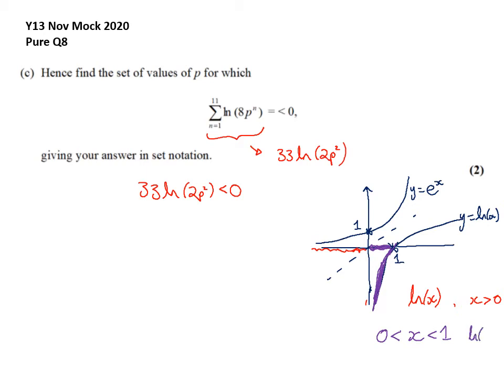ln of x is less than 0. ln is negative there. And I can also see from my graph, ln of 1 equals 0. So it's quite powerful just doing this little sketch.